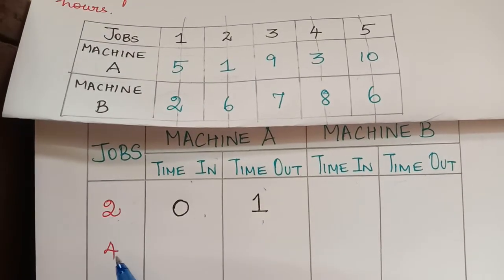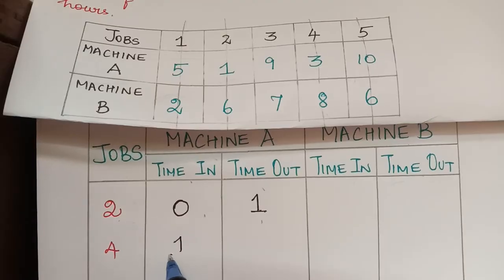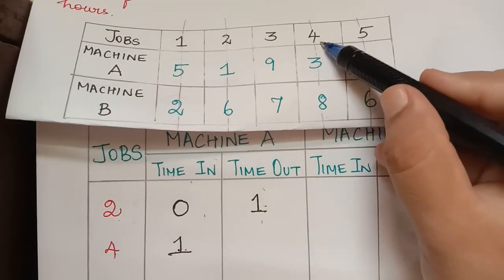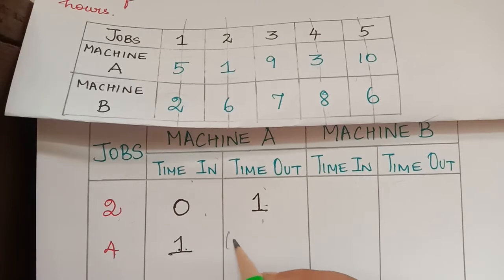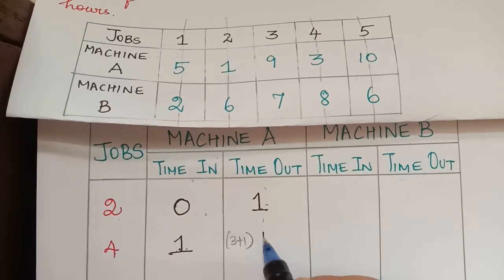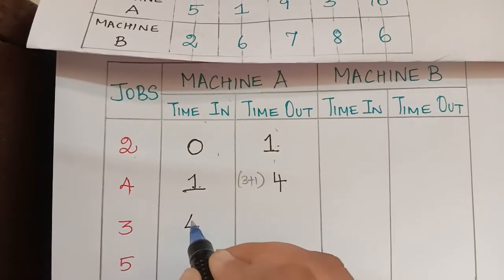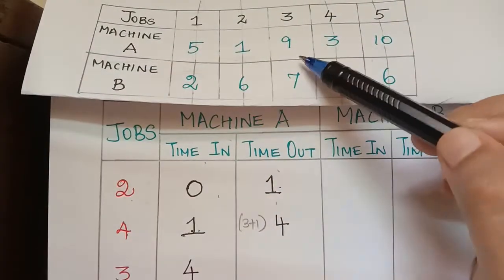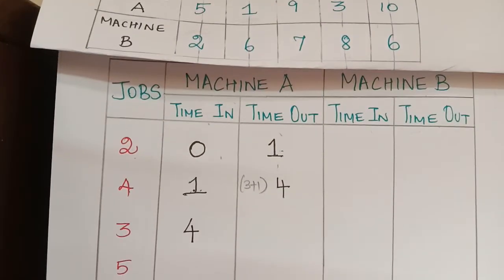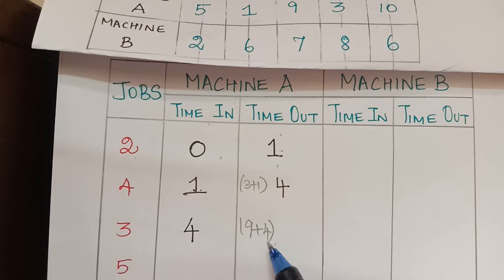Job 4 will wait for that 1 hour and enter machine A after it, so time in for job 4 is 1. Job 4 performs for 3 hours in machine A, so 3 plus 1 equals 4 — time out is 4. Job 3 enters at time 4; it takes 9 hours in machine A, so 9 plus 4 equals 13 — time out is 13.